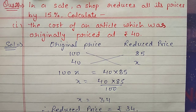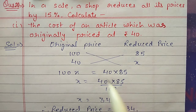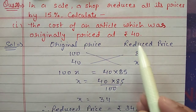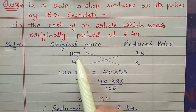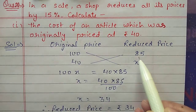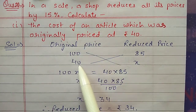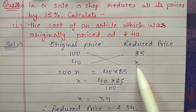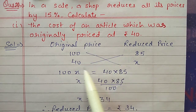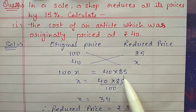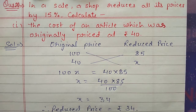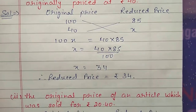Question number 20: in a sale a shop reduces all its prices by 15 percent. First part: calculate the cost of an article originally priced at 40 rupees. Suppose original price is 100, after reducing 15 percent it becomes 85. Original price is 40, after reducing it becomes x. Cross multiply: 100x equals 40 into 85. Shift 100 to the other side, cancel — reduced price is 34 rupees.